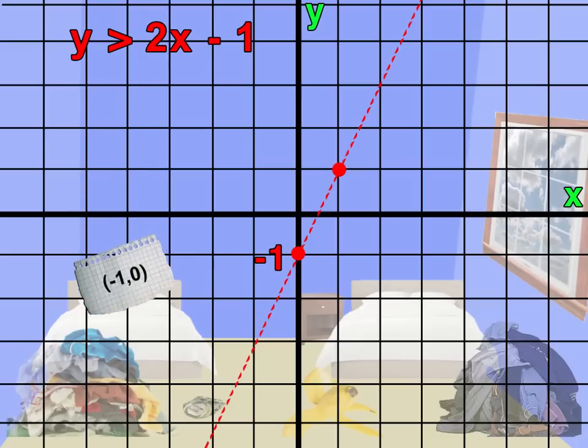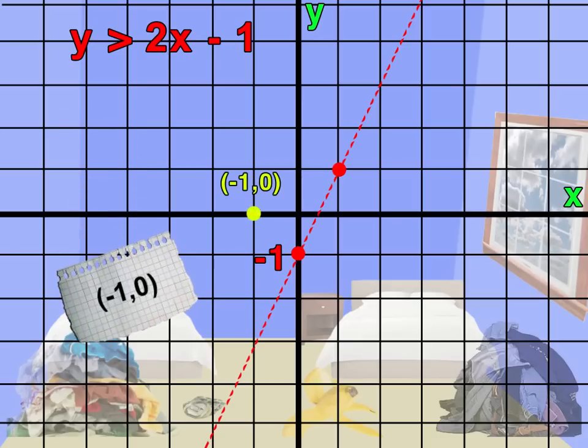Now let's check to see if minus 1, zero fits the requirement. We can substitute x equals minus 1 into the equation to get 2 times negative 1 minus 1, which equals negative 3.